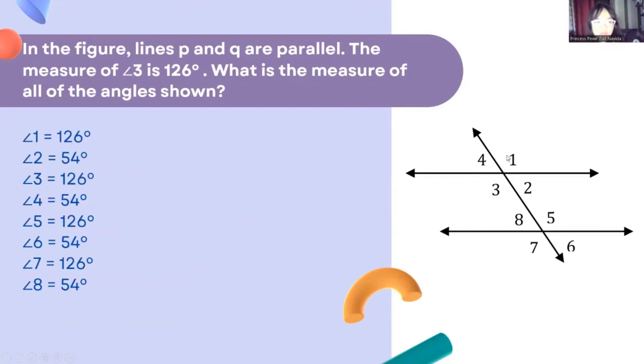So, here are the measurements of all angles. Angle 1 is 126 degrees. Similarly, angle 3, 5, and 7 are 126 degrees. Angle 2 is 54 degrees. And similarly, angle 4, 6, and 8 are 54 degrees.